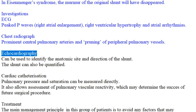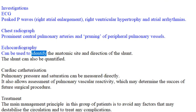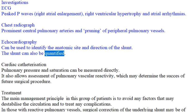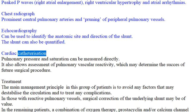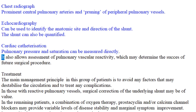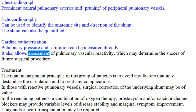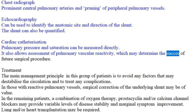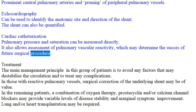Echocardiography can be used to identify the anatomic site and direction of the shunt, and the shunt can also be quantified. Cardiac catheterization allows pulmonary pressure and saturation to be measured directly, and also allows assessment of pulmonary vascular reactivity, which may determine the success of future surgical procedures.